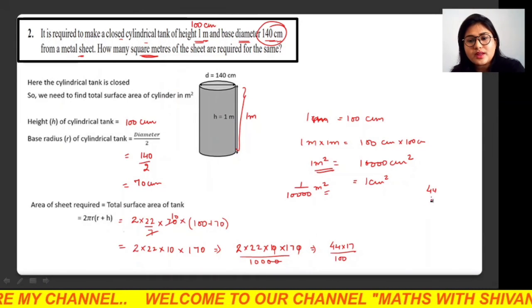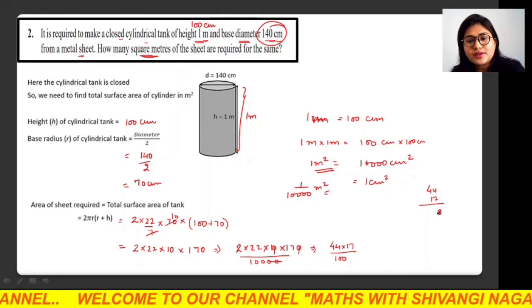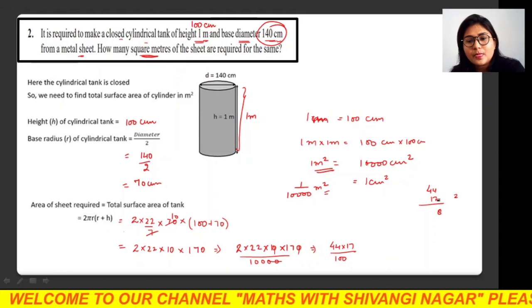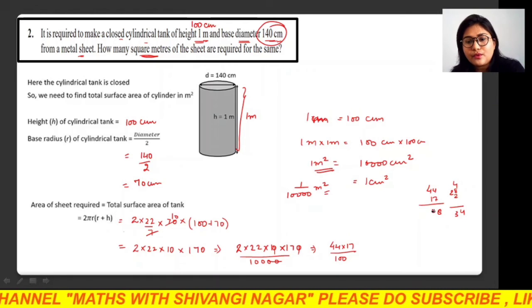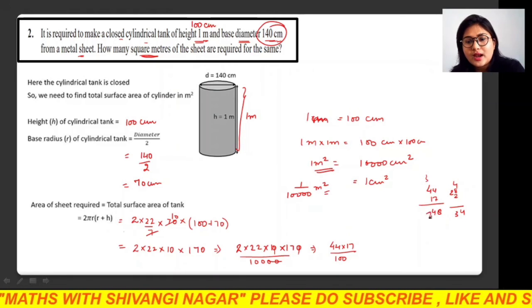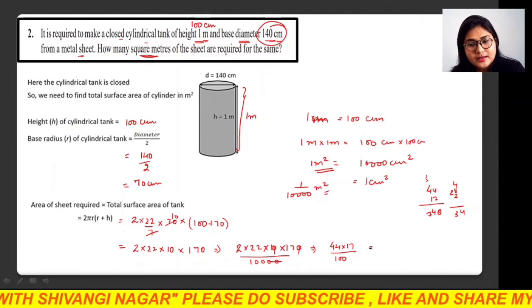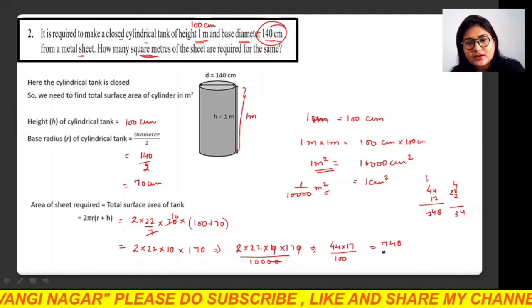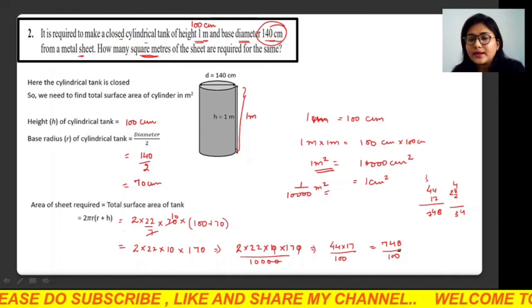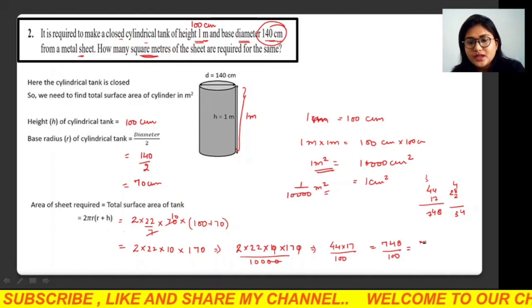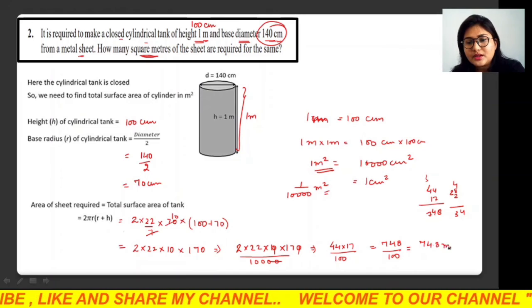Now 44 × 17 gives you: 4×7 is 28, carry 2, 4×1 is 4 plus 2 is 6, then 1×7 is 7, 1×4 is 4, giving 748. So 748 / 100 gives you 7.48 meter square.